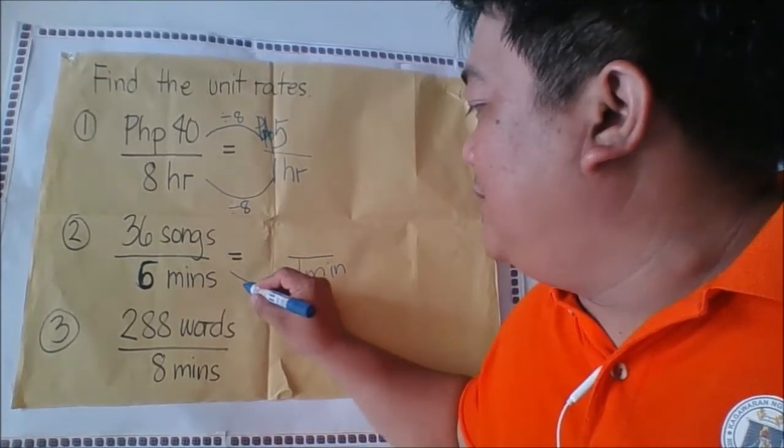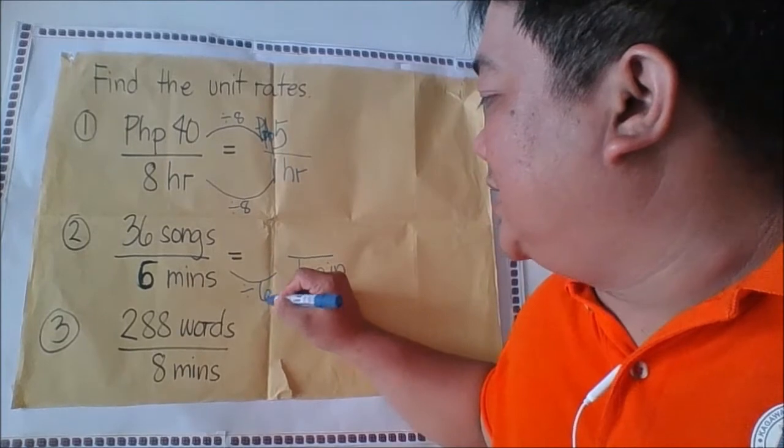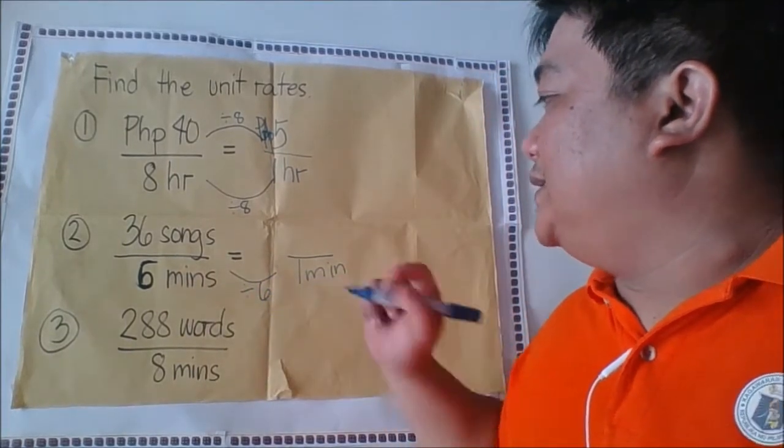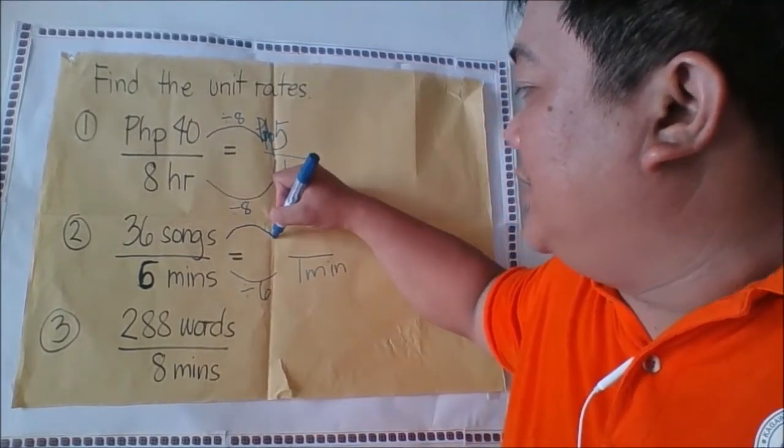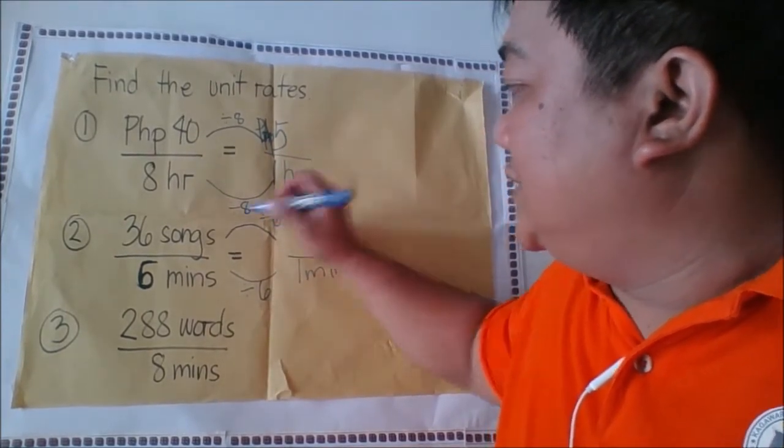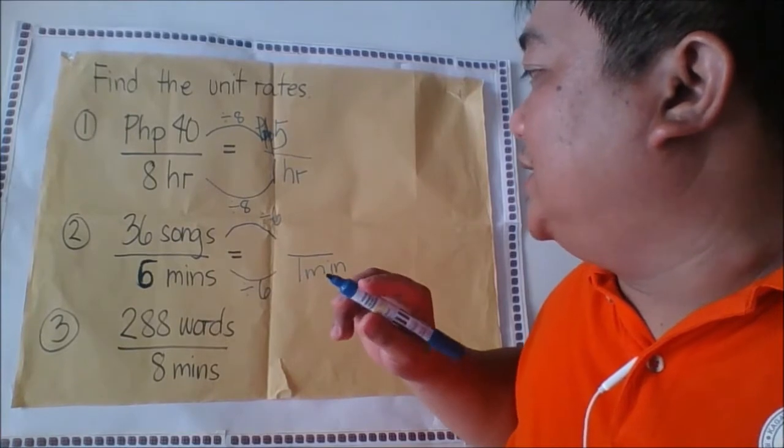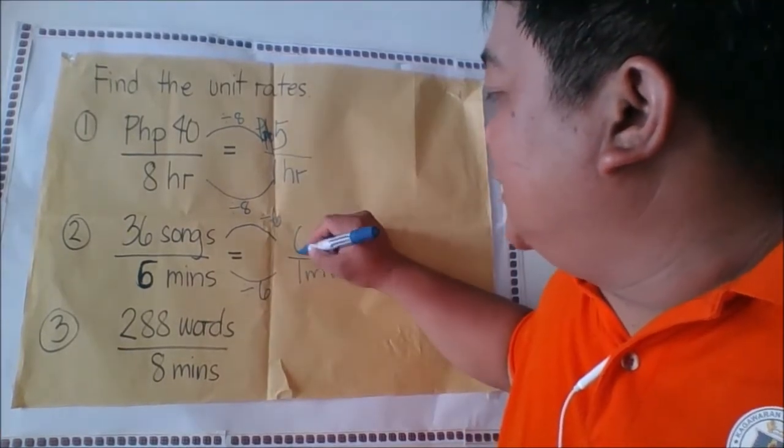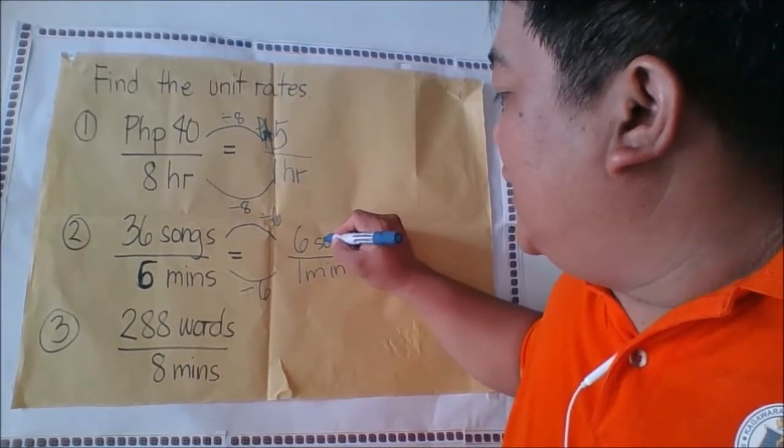Next we are also going to divide the first term by 6. 36 divided by 6 is 6. So there are 6 songs in every minute.